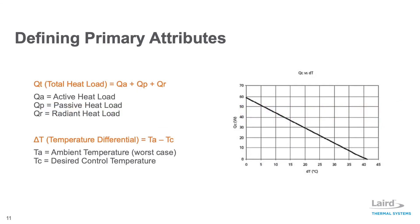In order to reduce the temperature of an object or chamber, heat must be removed faster than it is generated. There are two primary attributes a designer needs to determine to specify a thermoelectric cooler assembly. The first parameter is calculating the required cooling capacity, achieved by estimating the total heat load of the system. This consists of calculating the active heat load QA, passive heat load QP, and for outdoor applications, the radiant heat load QR.